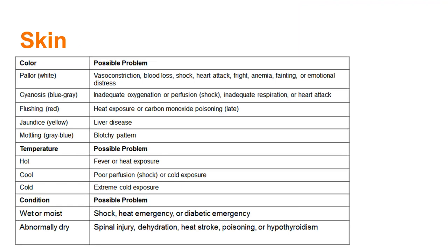Differences in skin presentation can tell you a lot. Pale skin may indicate hypoxia; severe hypoxia can lead to cyanosis — that blue coloration — which is a sign of shock and poor perfusion. Mottling is that gray-blue blotchy pattern. Jaundice is yellowing of the skin and eyes, indicative of a liver problem. When assessing skin, check color, temperature, and condition: are they pink, warm, and dry, or pale, cool, and clammy?